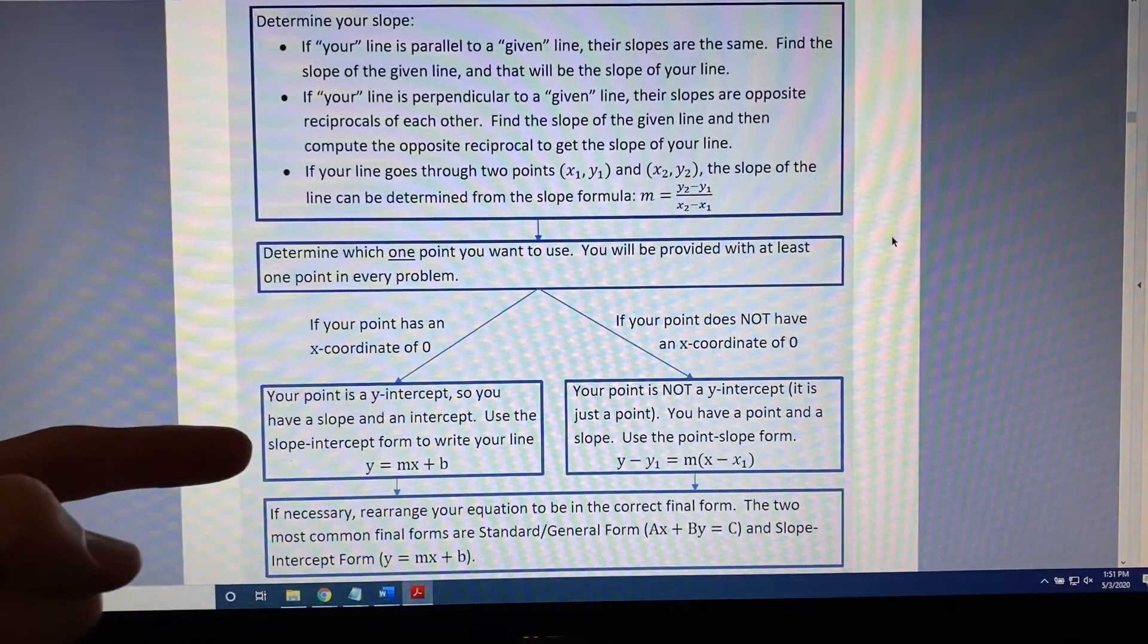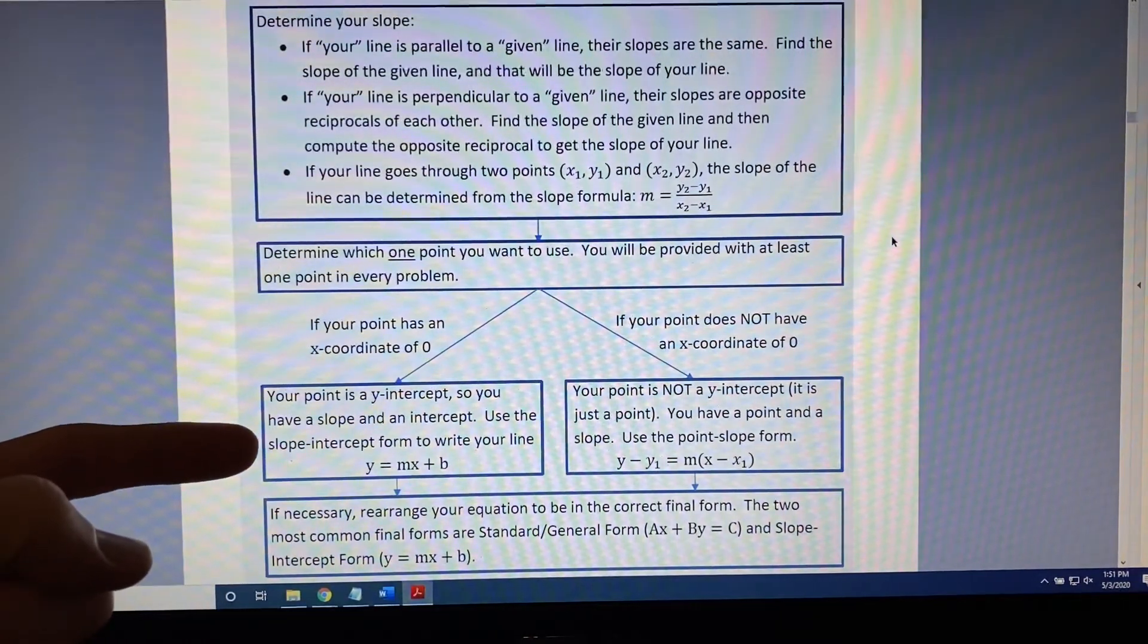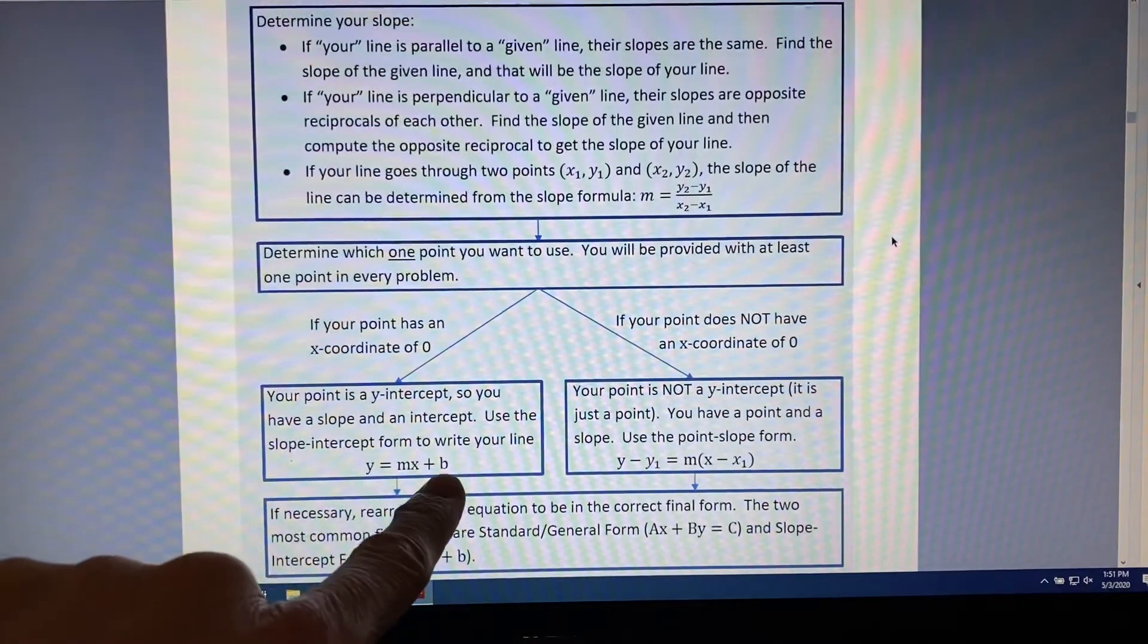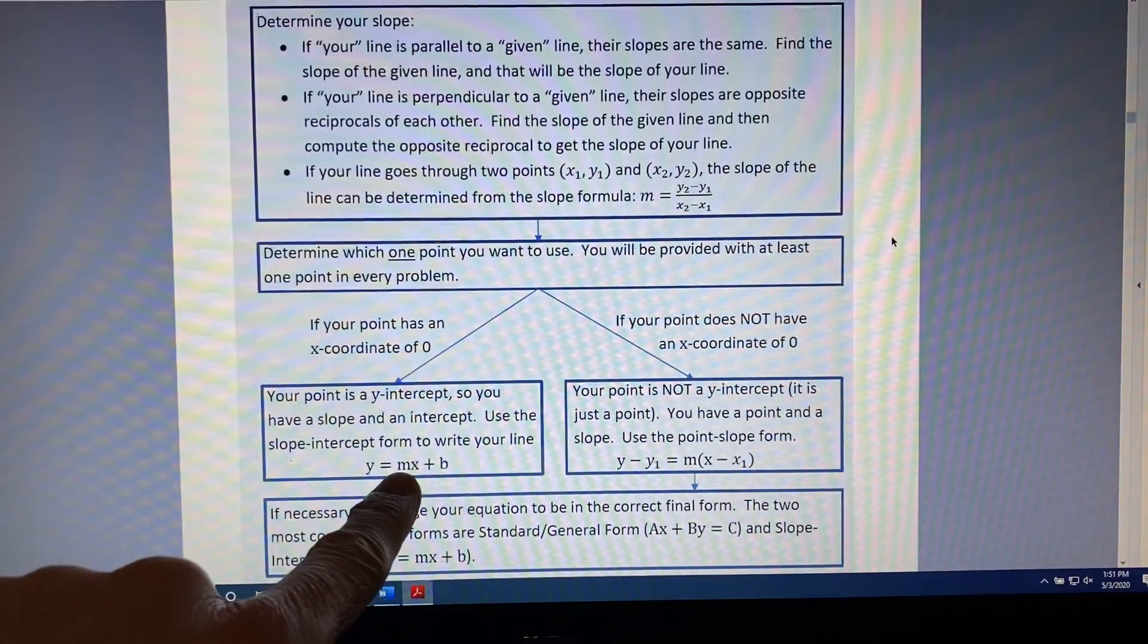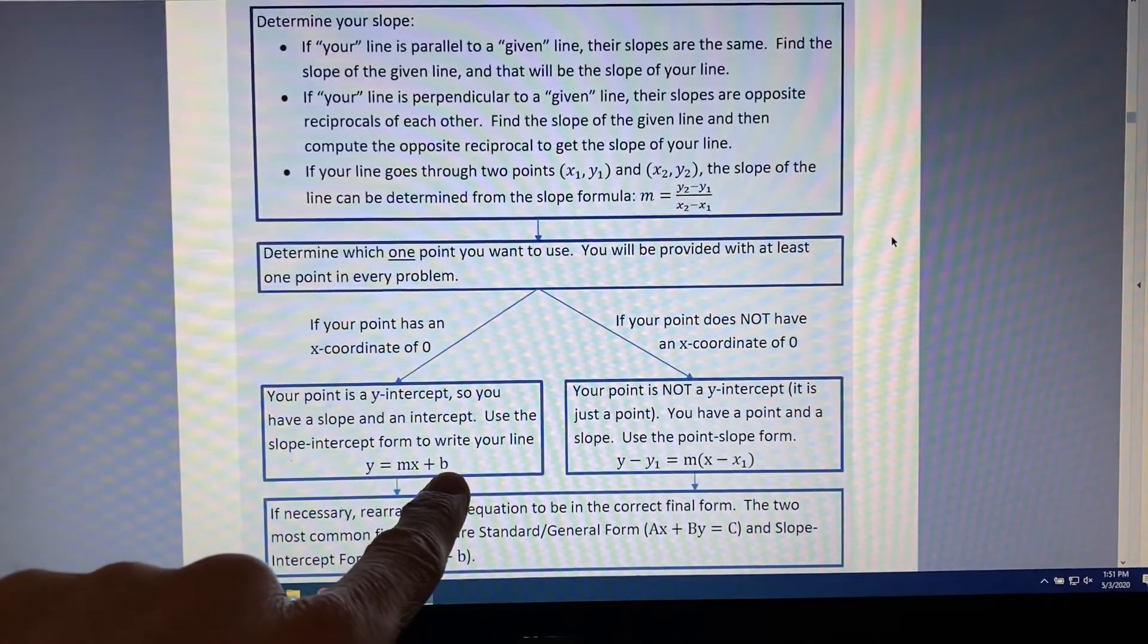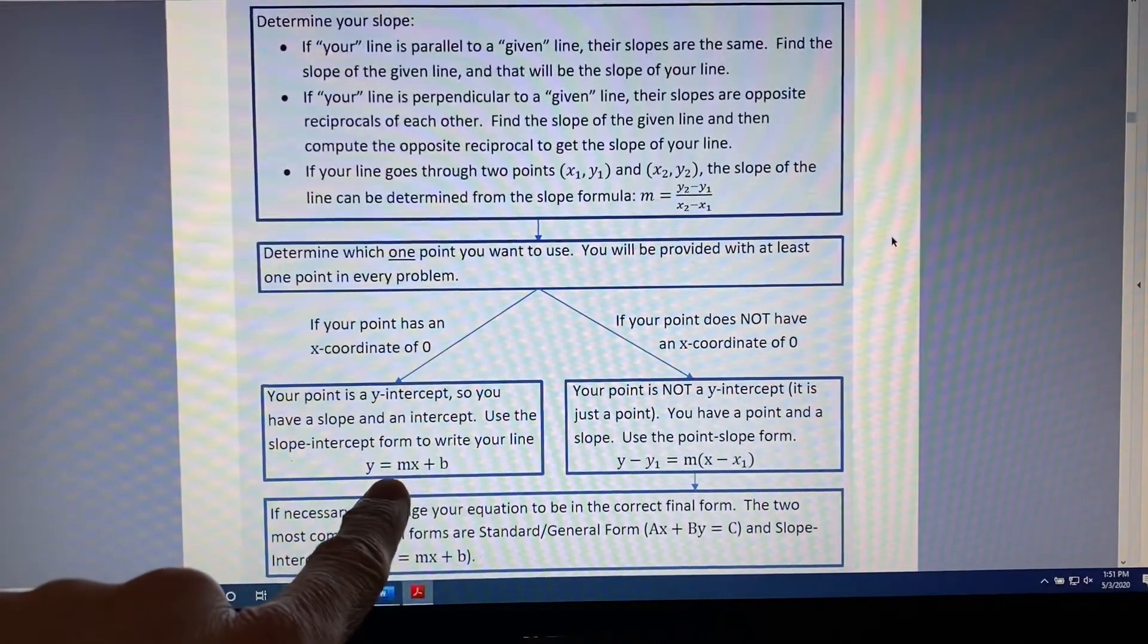You have a slope and an intercept. So, you'll use the slope-intercept form, y equals mx plus b. Just put your slope, m, and the y-coordinate of your y-intercept, b, in this equation.